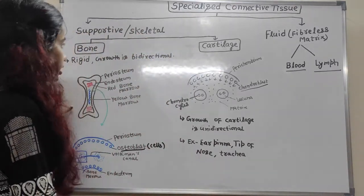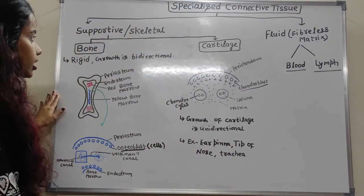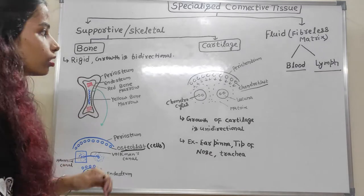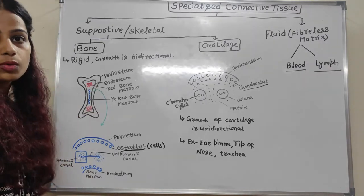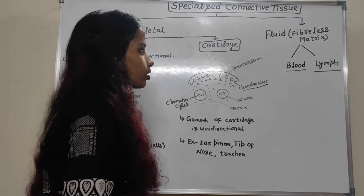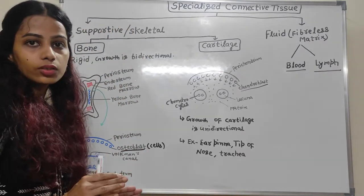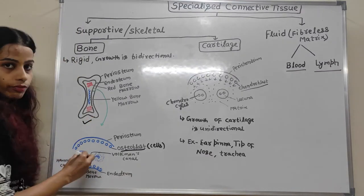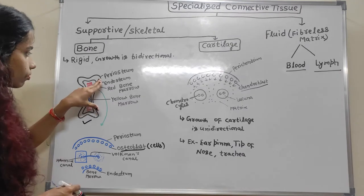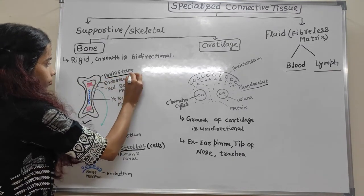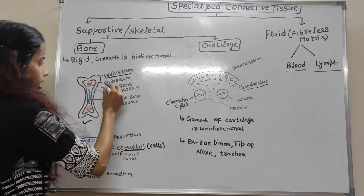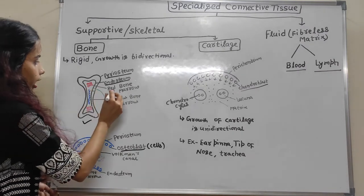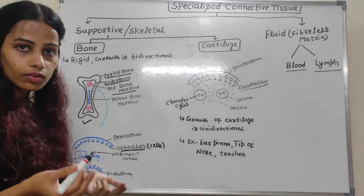Supportive or skeletal connective tissue is further divided into bone and cartilage. There are 206 bones present in the human adult, distributed throughout the body. In the structure of bone, the outer layer is known as periosteum, the inner layer is known as endosteum, and the red colored structure is red bone marrow where RBCs are formed.